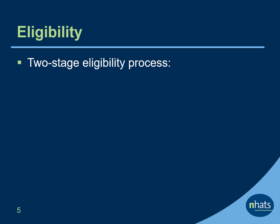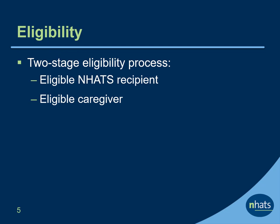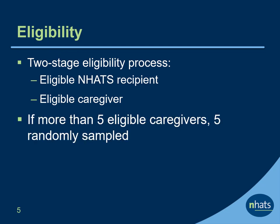NSOC uses a two-stage eligibility process. First, NHATS participants are eligible if they received help with self-care, mobility, or household activities for health or functioning reasons, or if they lived in a residential care facility. Next, family and unpaid caregivers who provided help to an eligible NHATS participant with any activity are eligible for NSOC. And if more than five caregivers are eligible for NSOC, only five are randomly selected.